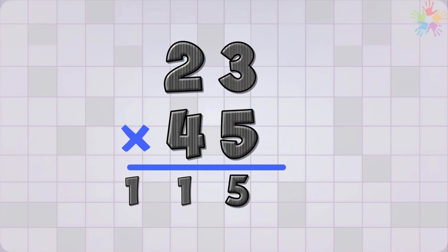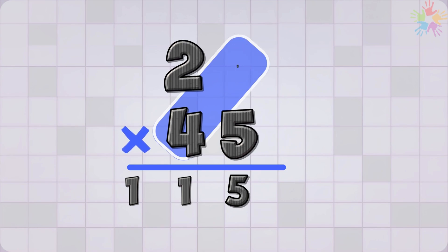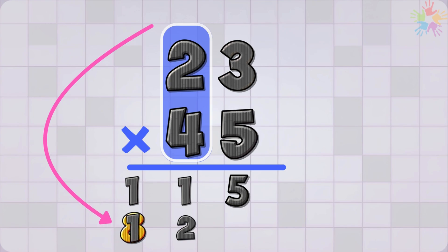Now move to 4, which is in the tens place. Again, we multiply 4 by each digit in 23. 4 times 3 equals 12 as always. We write 2 and carry 1 on top of the 2. Now 4 times 2 equals 8.